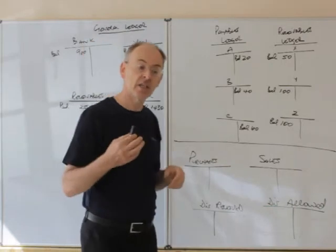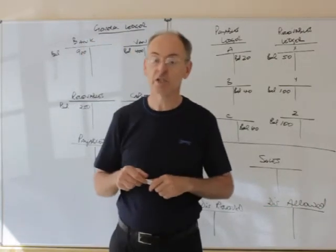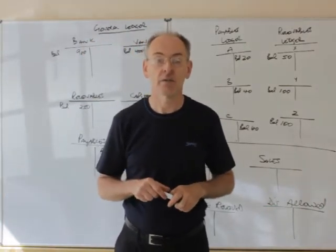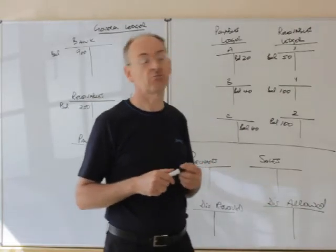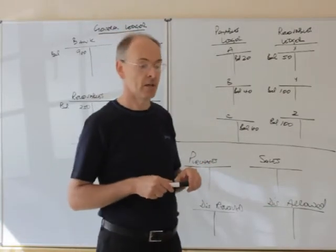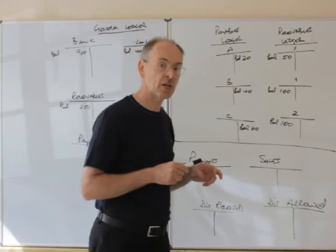So, I'll give you an example. The first example is we're going to do a credit sale of, let's say, £600. And so we'll set that up with the general ledger first.